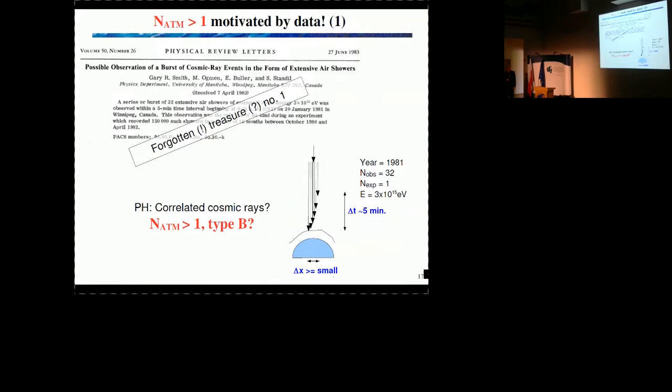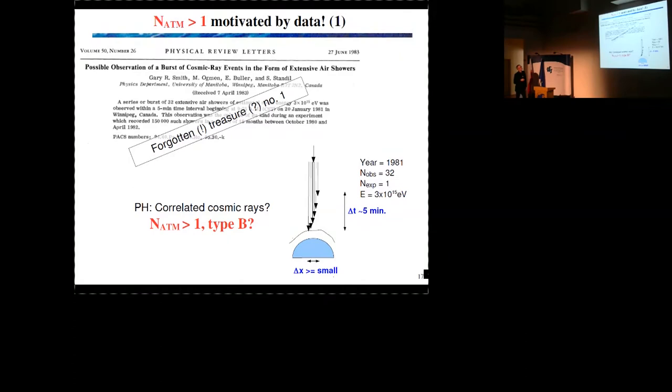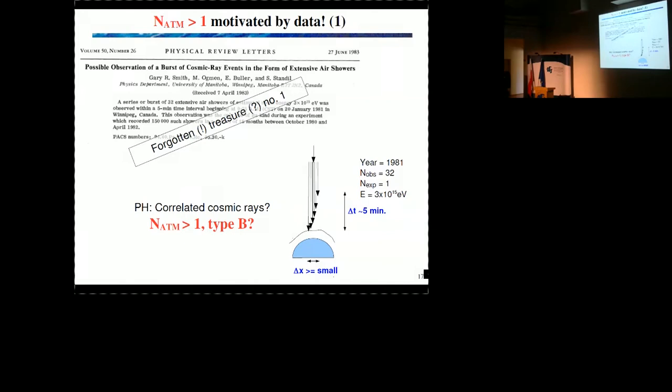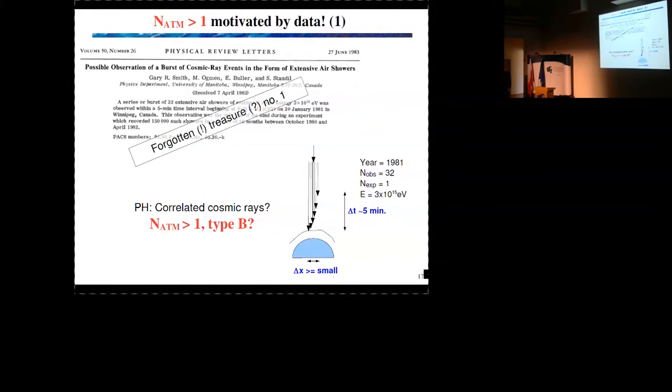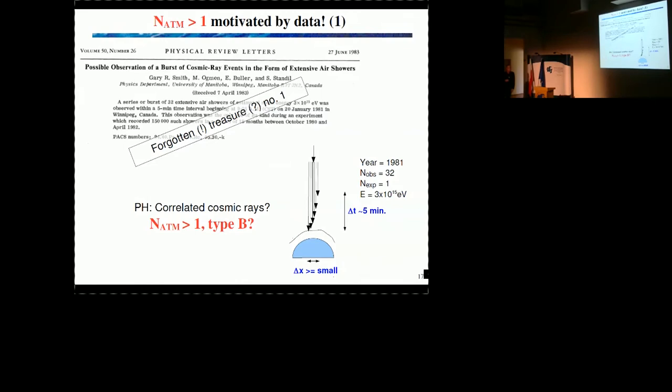If we want to interpret the signal on ground and infer properties of primary particles, we have to assume a lot. This is all unknown. And the cascade approach, I was very happy to discover that this cascade approach is motivated by data. You see the date here is 1983. I was 8 at the time. Then I am already nearly 20 years in the cosmic ray field and I was not aware of this publication. So I call it now forgotten, maybe treasure. Because it reports about a peculiar event from a cosmic ray detector where the number of expected air showers of energy is quite large. 10 to 15 is 1. And the observation is 32. It has no explanation within the paradigm physics. Maybe it is an ensemble of cosmic rays. Maybe it is a cascade type B.